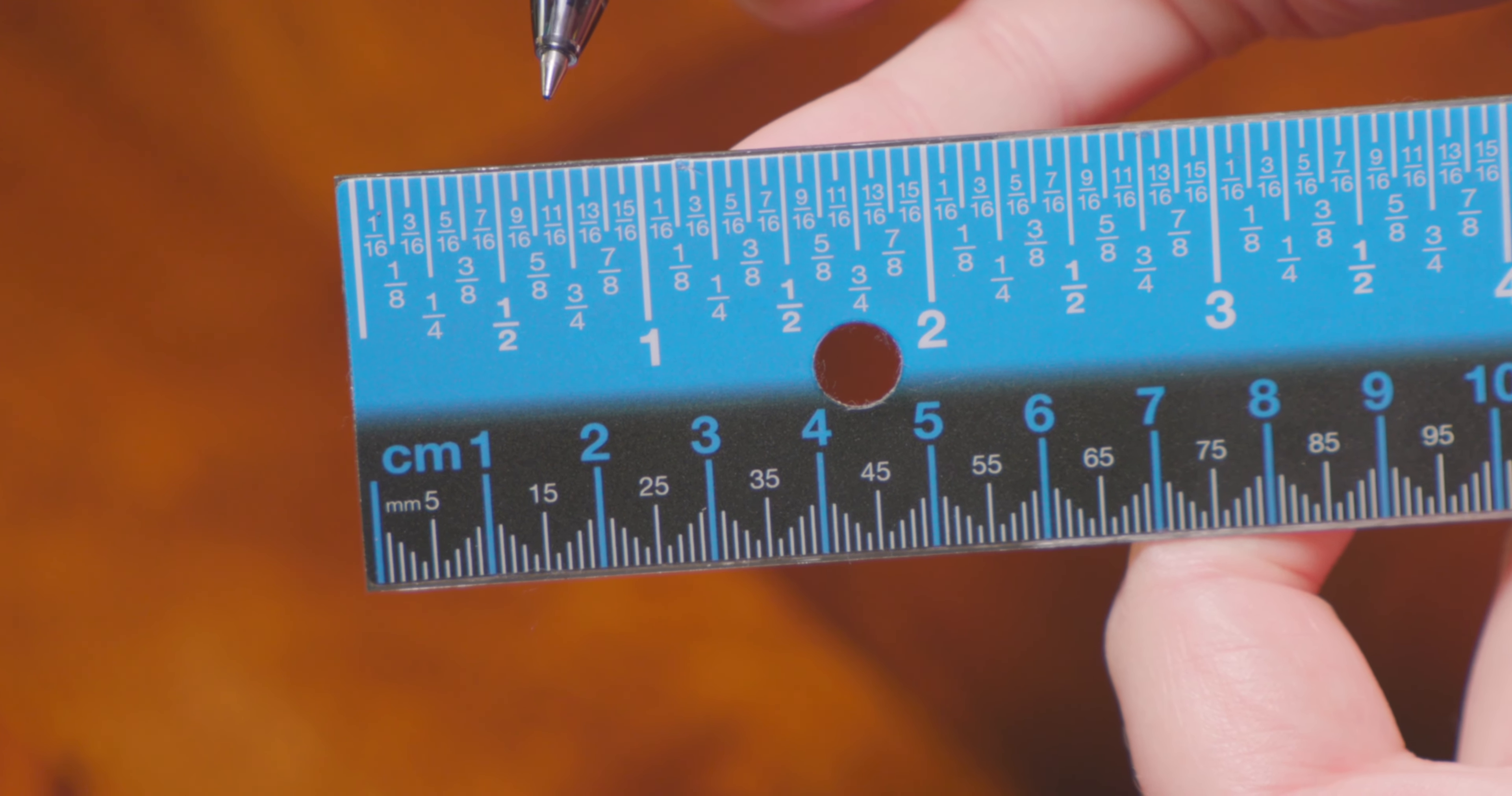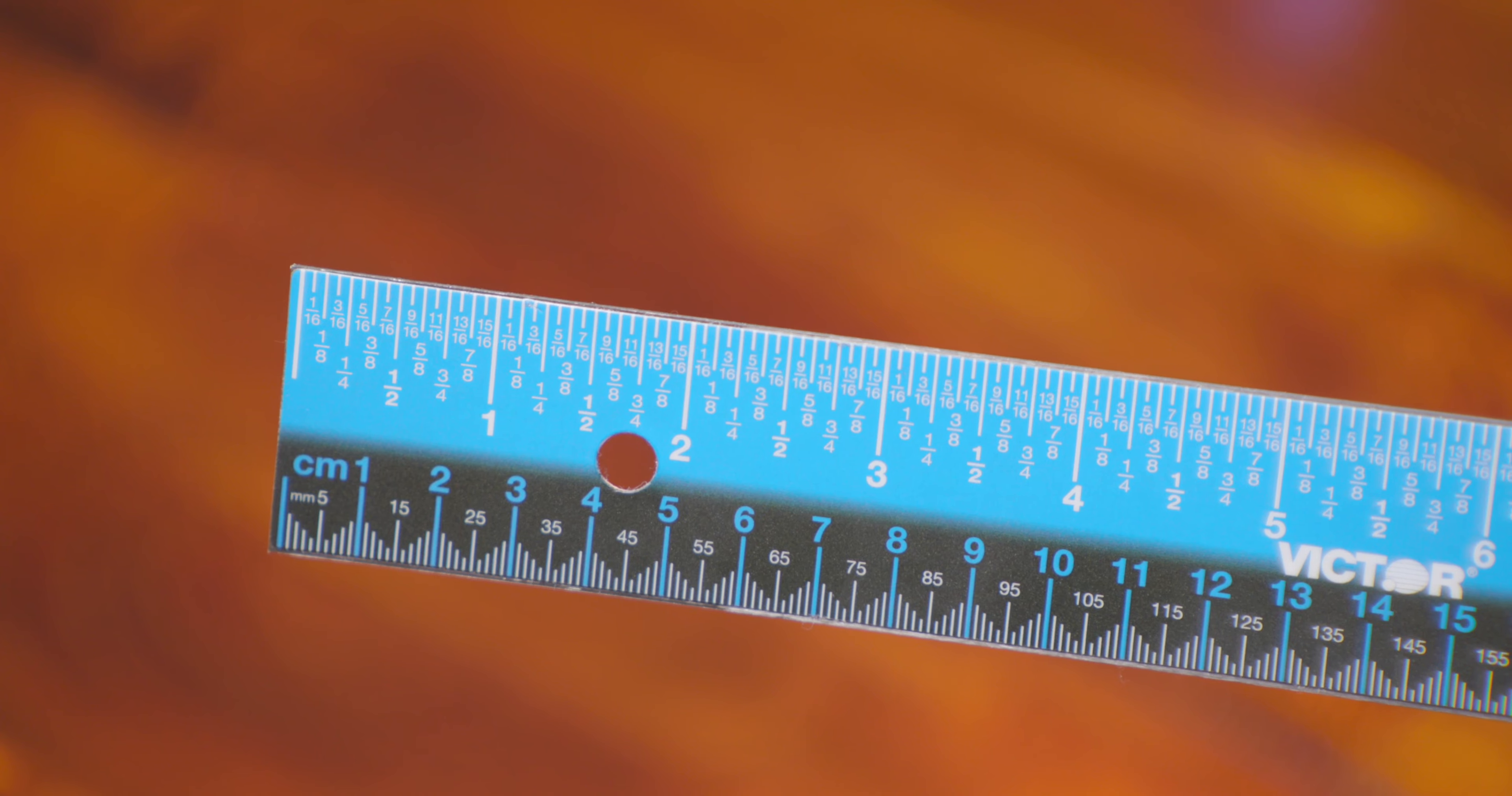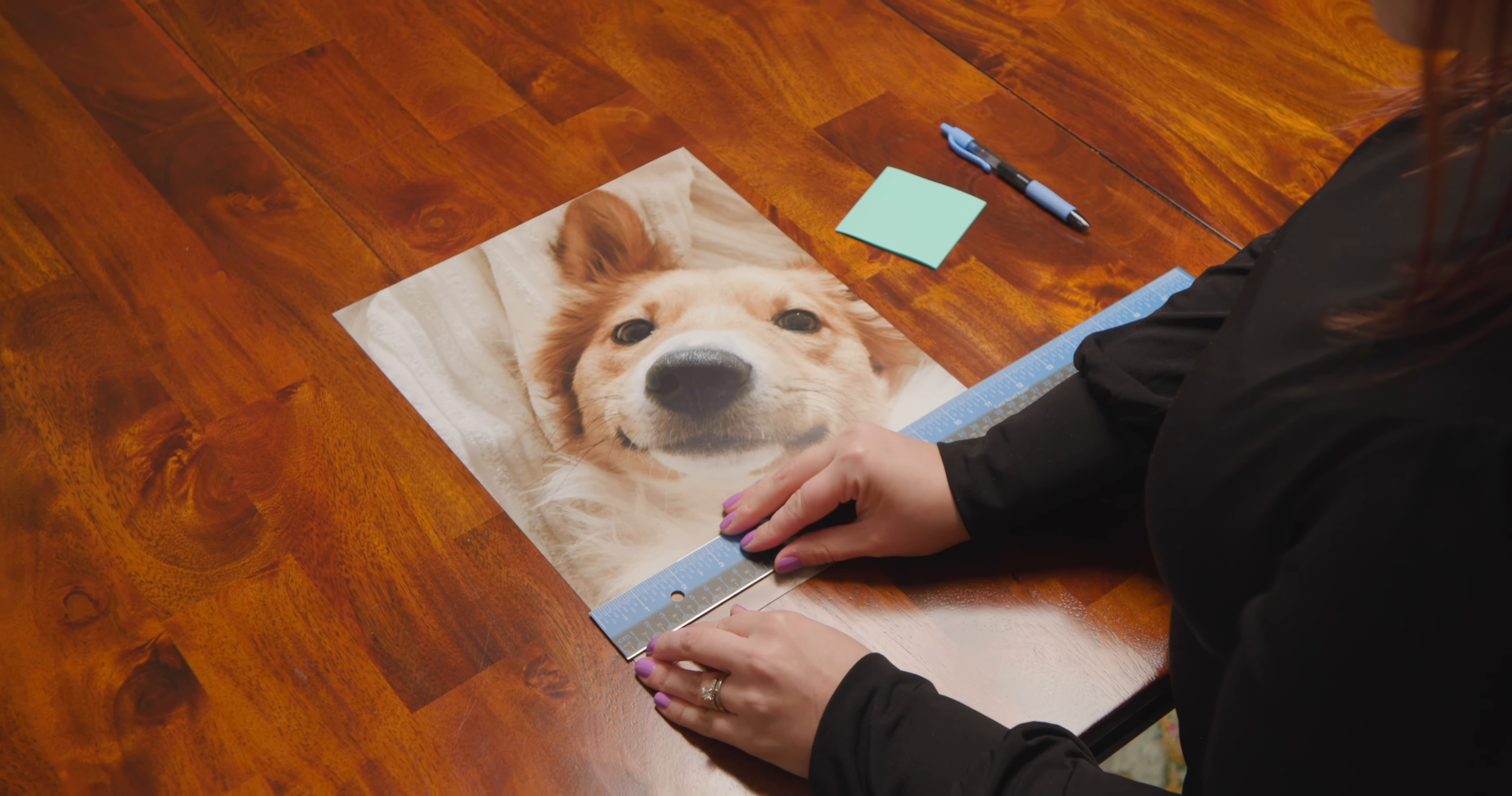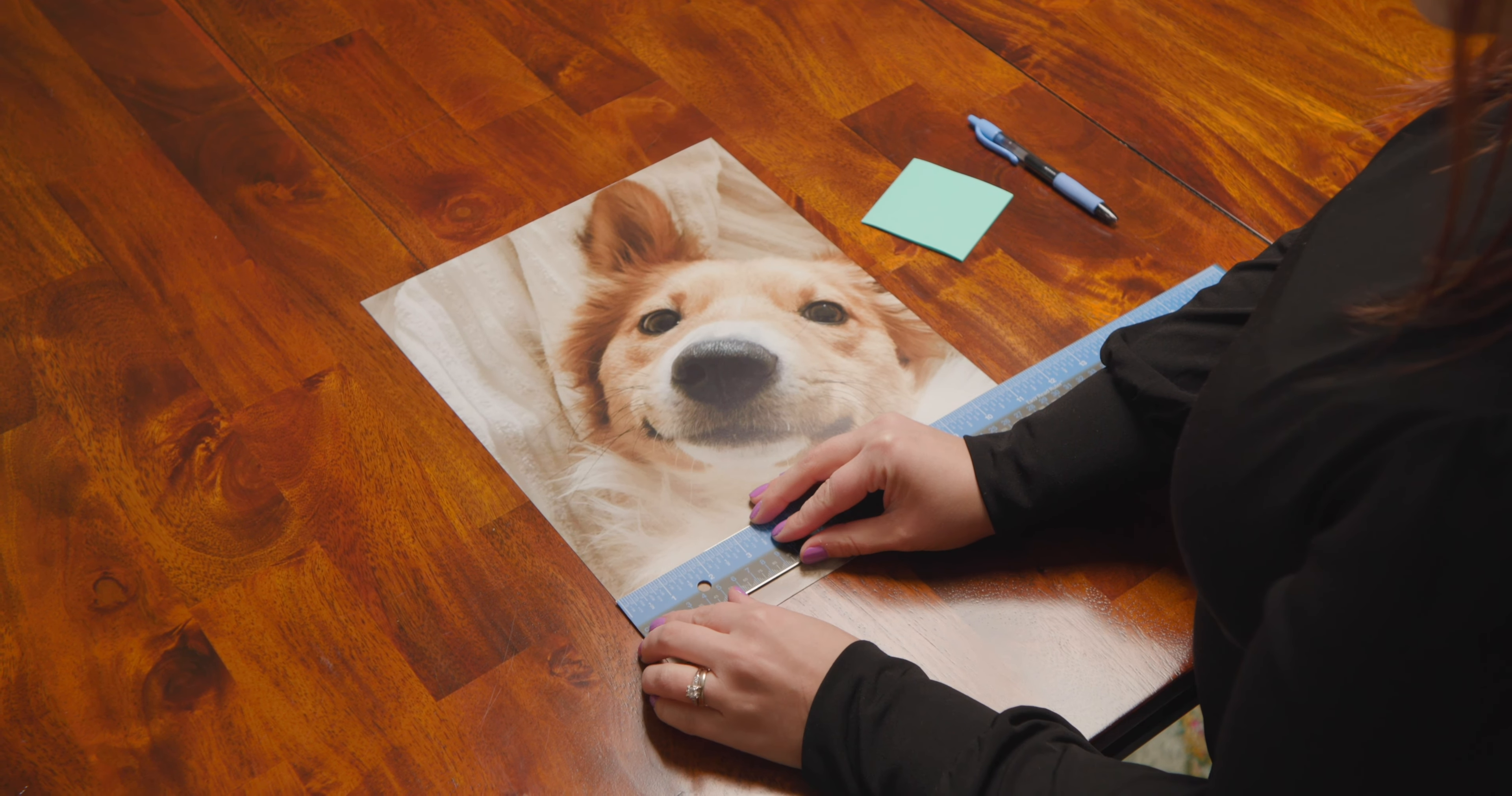Pro tip: use an easy read ruler for a foolproof way to get your incremental measurements right. Making sure you start from the zero point, line it up to the left edge of your art going all the way to the right edge.